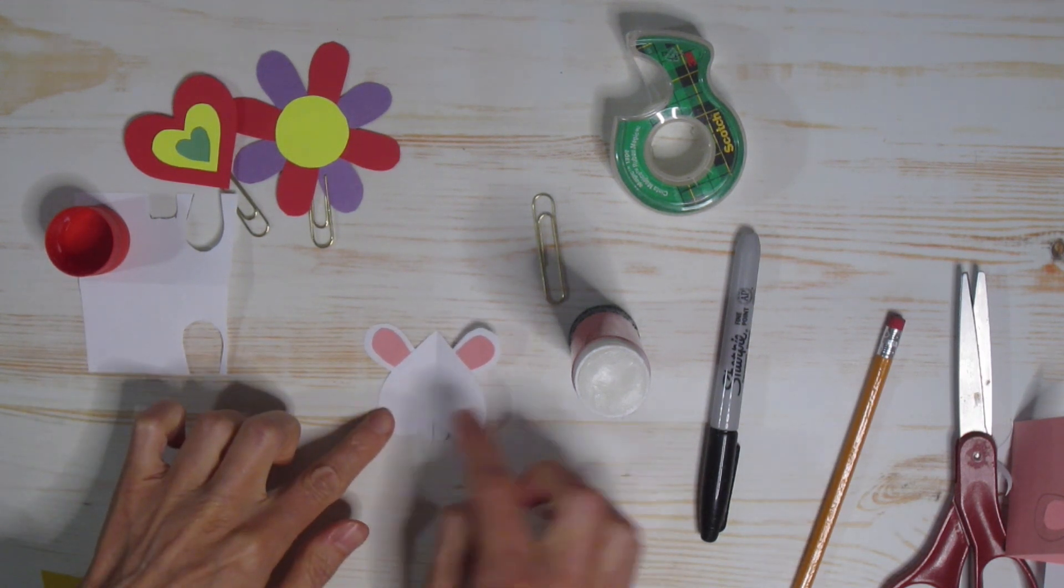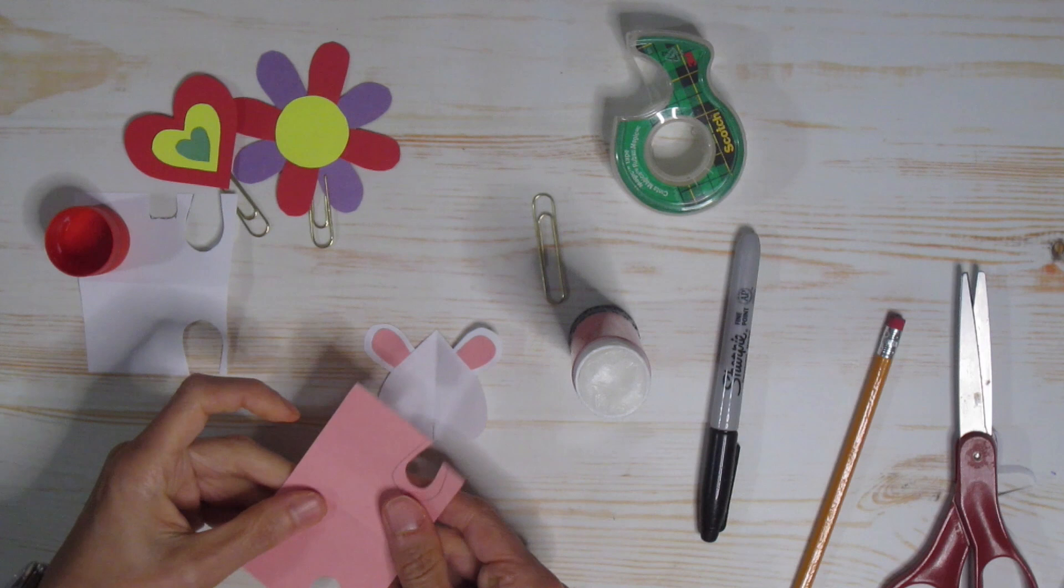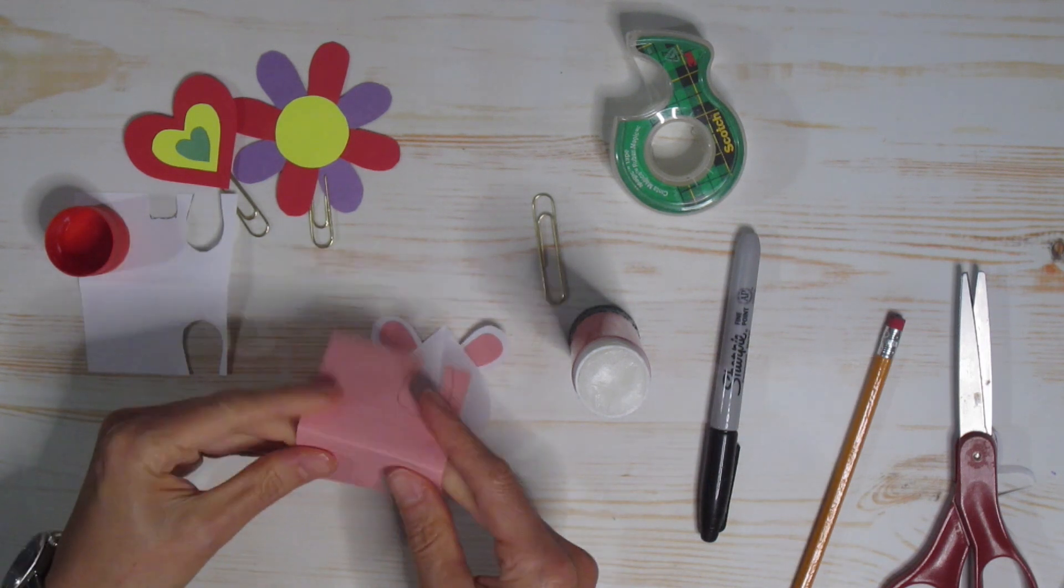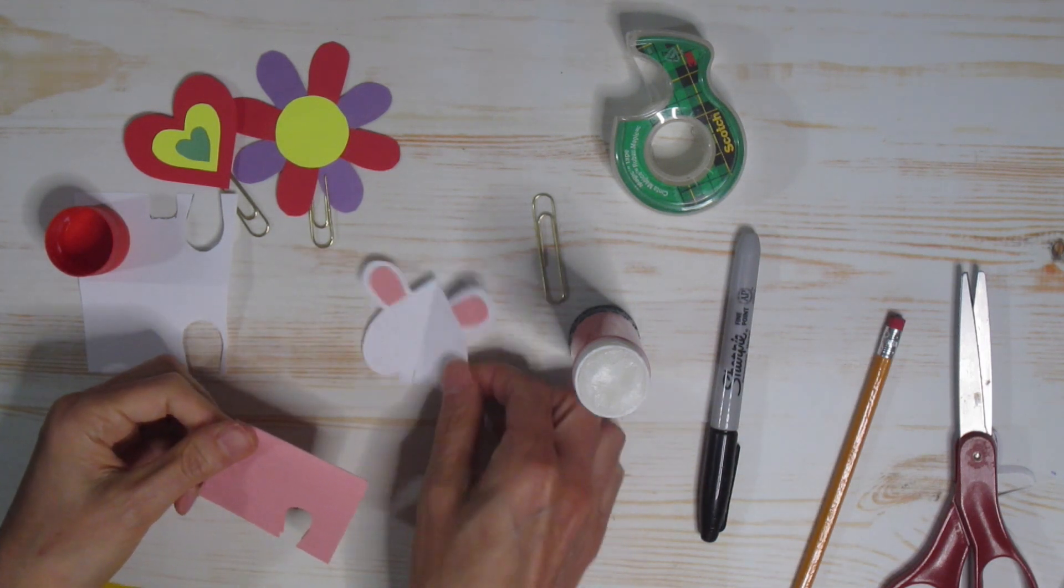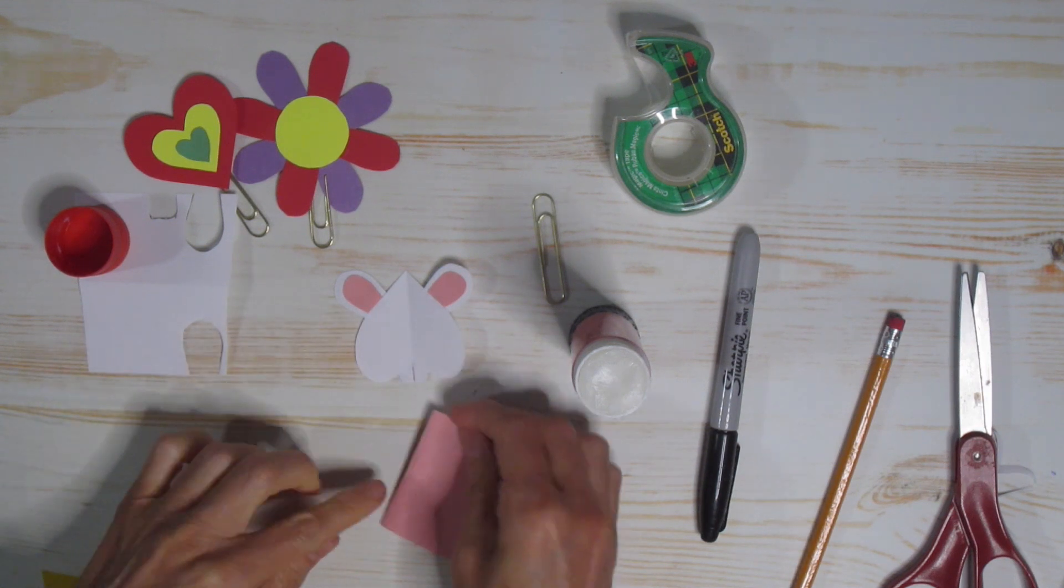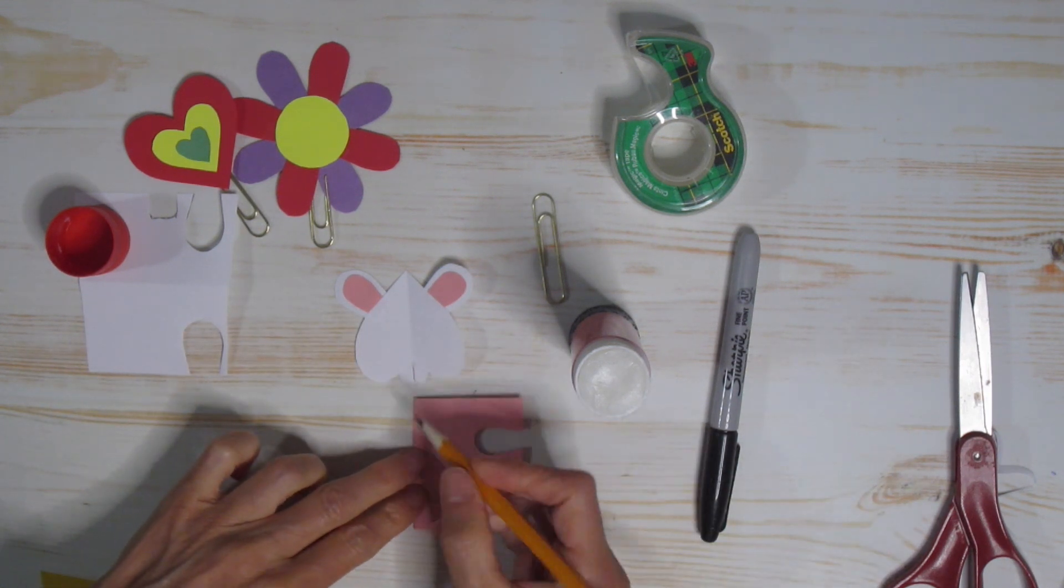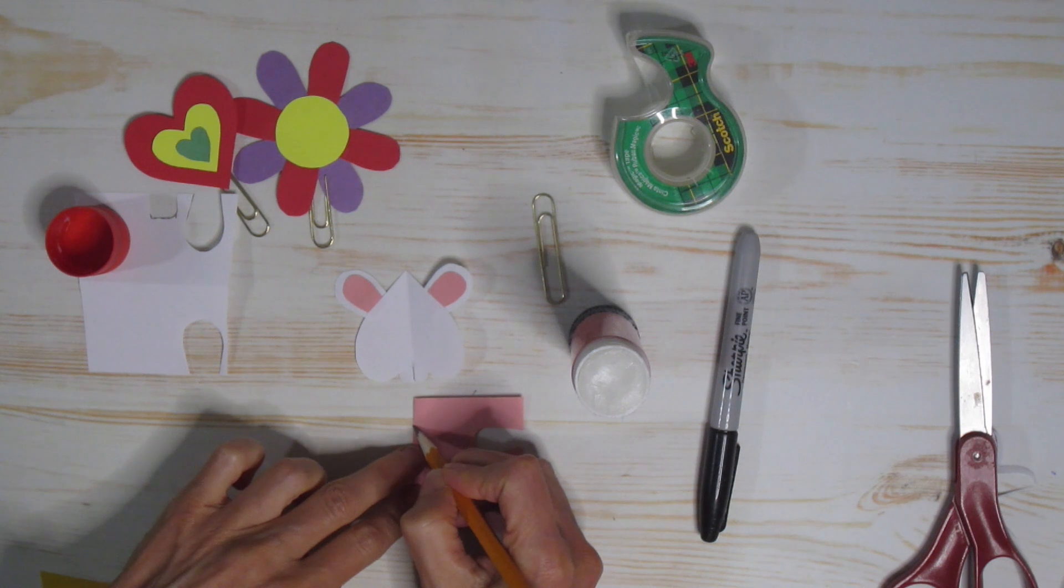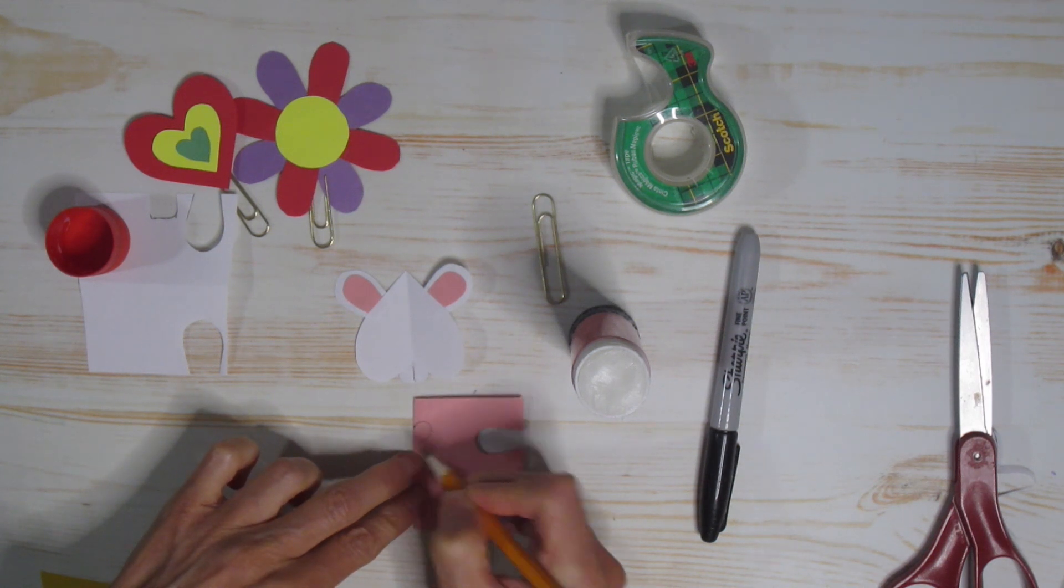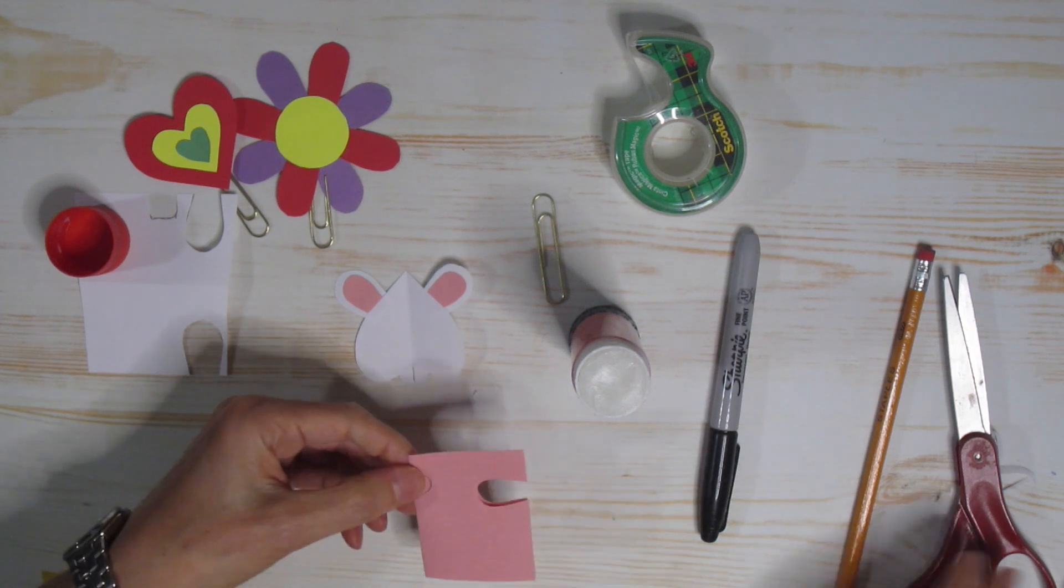Okay, now we need a little nose. So I'm going to grab that pink piece of paper again. I'm going to keep it folded. So here, remember folded. This time I'm going to work on the fold line. I'm going to draw a little heart for the nose. So I'm just going to go on that fold line, go up and around. This is going to be my little nose.